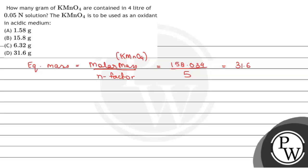But this is equivalent mass and we have to find out the mass. Using normality we can calculate. We know normality is given by the formula: given mass divided by equivalent mass divided by volume in liters.